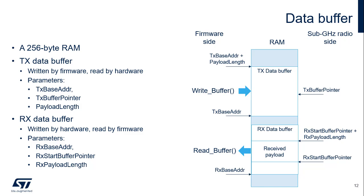Data for transmit and receive is held in the sub-Gigahertz radio 256-byte data buffer RAM. The transmit and receive data buffers are accessed via the sub-Gigahertz radio serial peripheral interface command. The RAM has a circular nature; any address increment exceeding 0xFF wraps around to address 0x00. The transmit buffer is written by firmware and read by hardware; the start of the transmit buffer is defined by the transmit base address, and the length is defined by the payload length. The hardware uses the transmit buffer pointer to read the data.